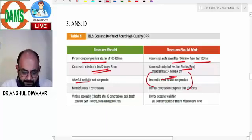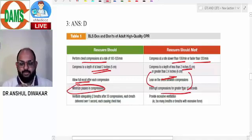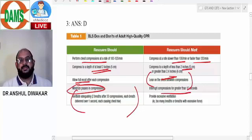If you lean, you'll keep the intrathoracic pressure positive, and there won't be negative pressure to suck blood from periphery. Minimize pauses in compression - do not interrupt for more than 10 seconds. Adequate ventilation means 30 compressions followed by two breaths. Do not over-ventilate, as over-ventilation decreases prognosis.